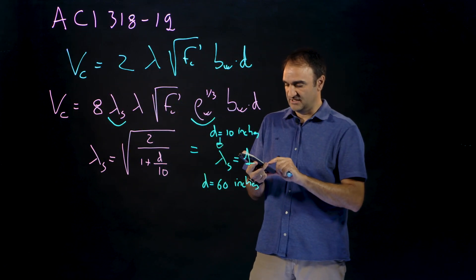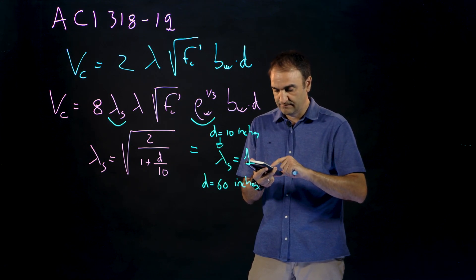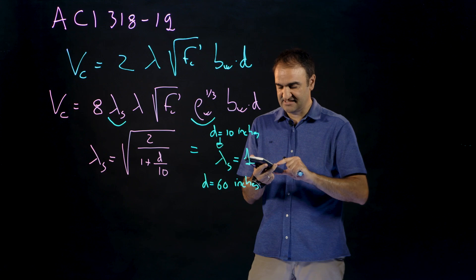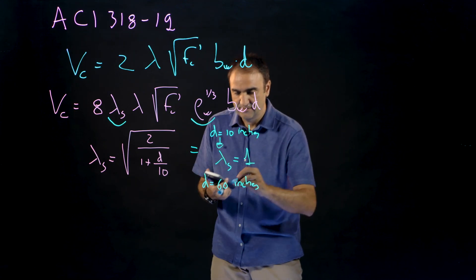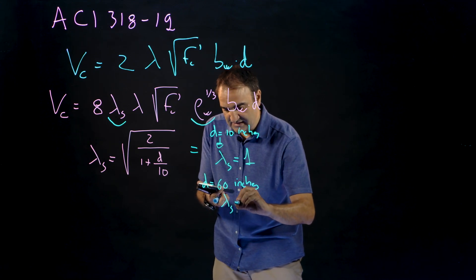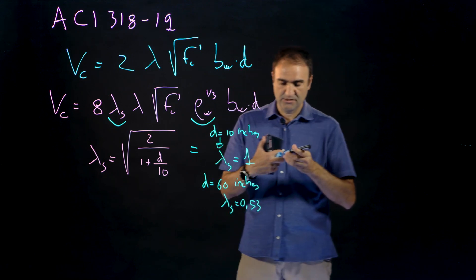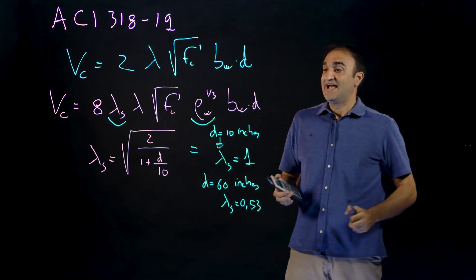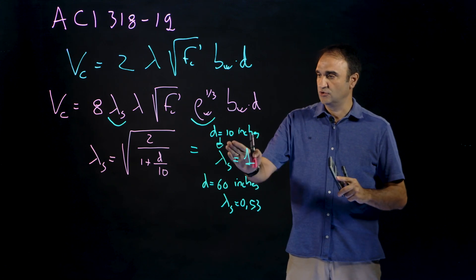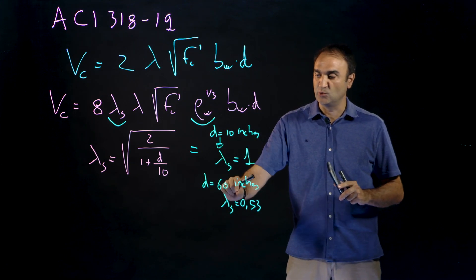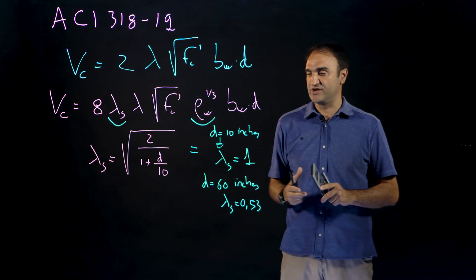But if you have a larger beam, let's say for example d equal to 60 inches, then we have to calculate this. We have the square root of 1 over 1 plus 60 over 10 and this is something like 0.53. So look, proportionally the shear strength is going to decrease by 50 percent from a small member to a larger beam and this was not included in the previous equation.